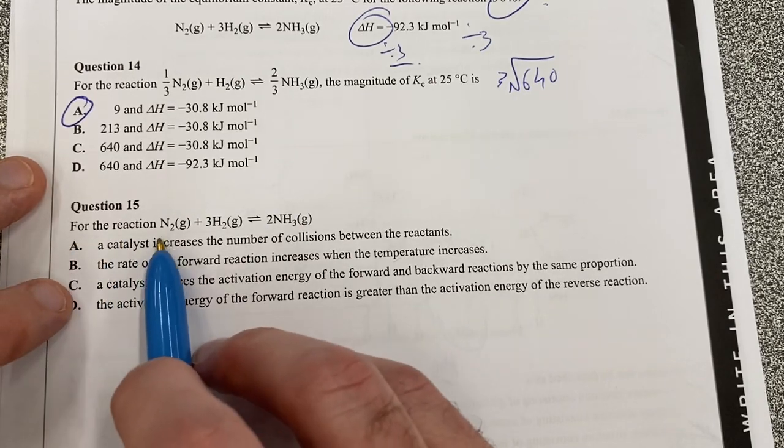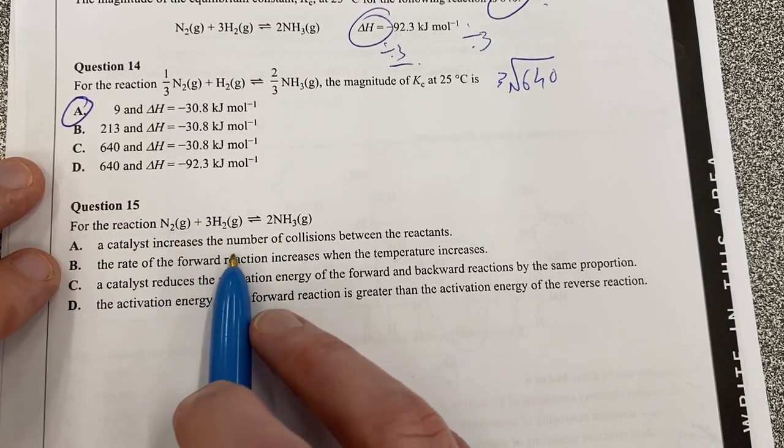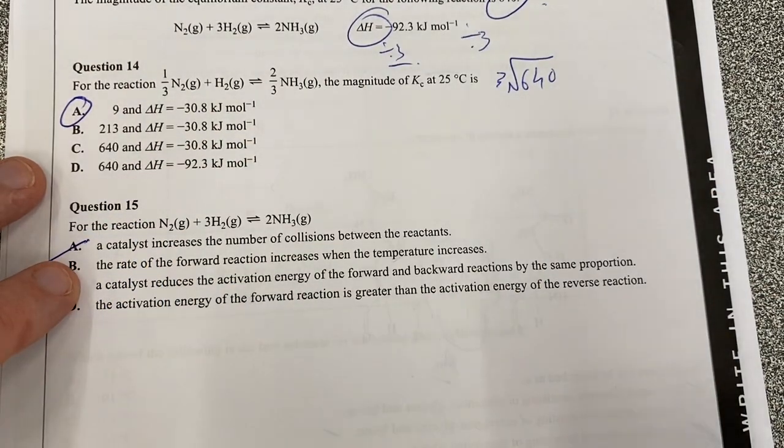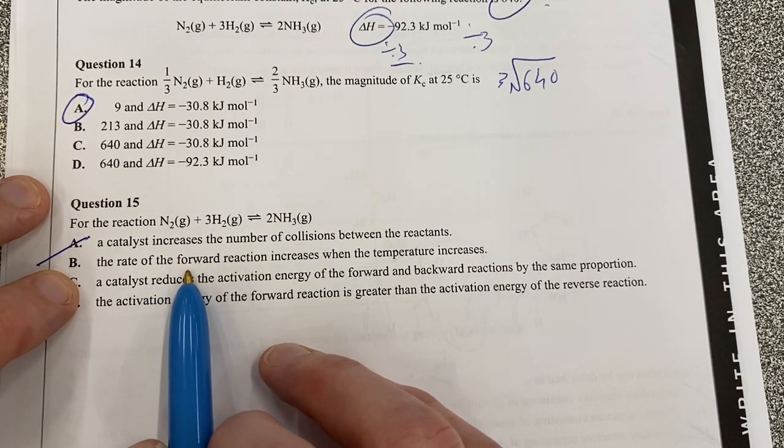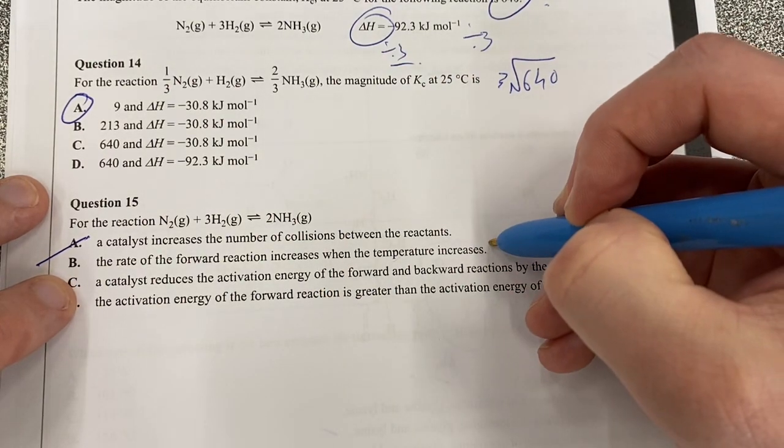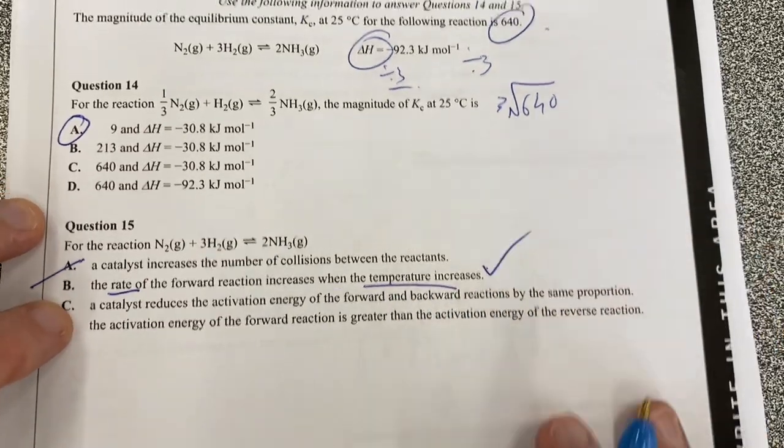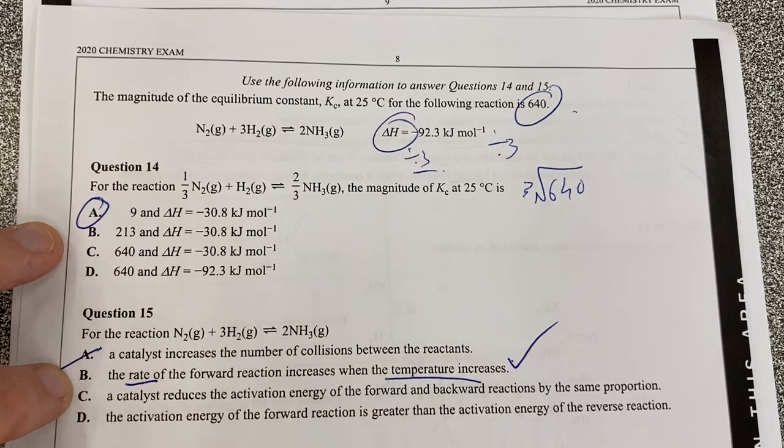For the reaction N2 plus 3H2 what happens here? A catalyst increases the number of collisions. No the catalyst will just increase the proportion of successful collisions. The rate of a forward reaction increases with increasing temperature. The rate of the forward yep so the rate of any reaction will increase. You're going to favor the backwards reaction but the rate of the forward will still increase.